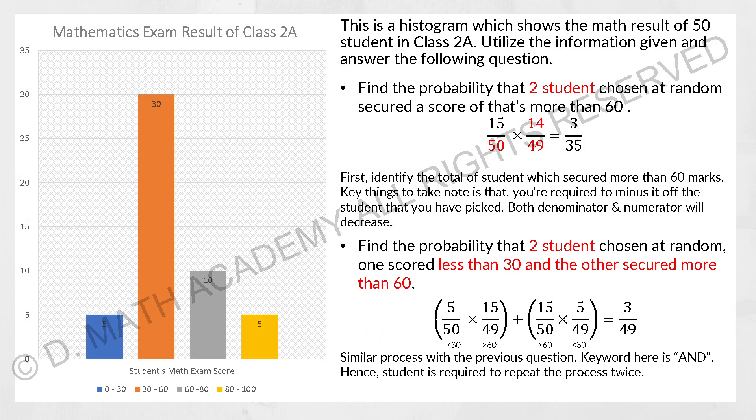And for the last one, this one they use the histogram to hide the probability information. So find the probability that 2 students chosen at random secured more than 60. So for more than 60, it's actually 15 in total, 15 over 50 students multiplied by 14 over 49 students. They didn't mention about taking it out and then they didn't replace it back. However, it is a default that applies to human related calculation. So your numerator and denominator will decrease. You will get your final result as 3 over 35.